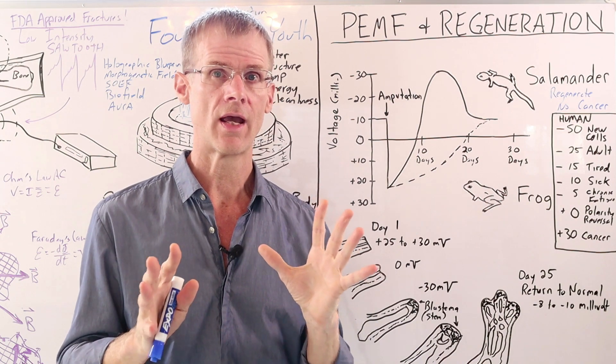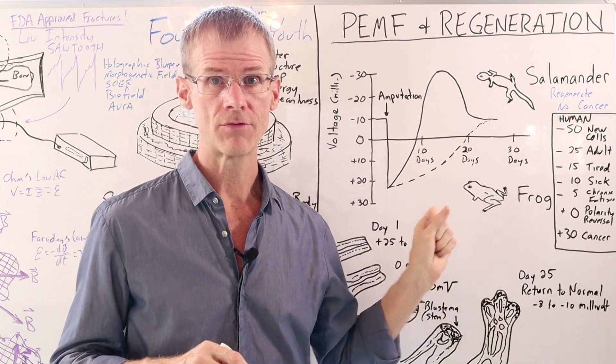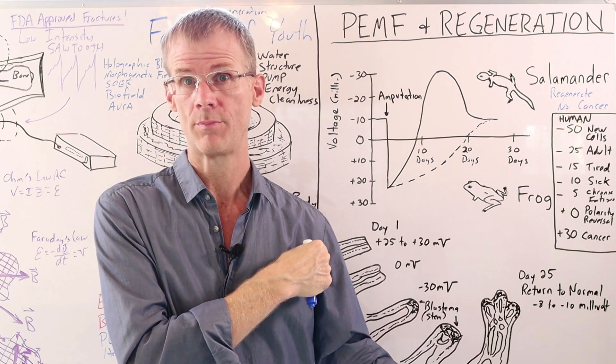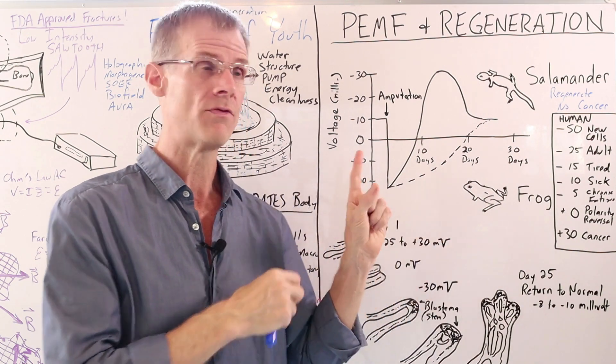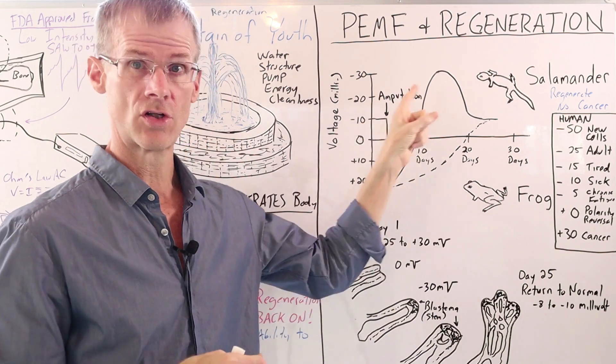What Becker did was he surgically amputated salamanders and frogs and he measured the voltage on the stump. You know, after it kind of healed over, you can measure the current or the voltage. And what he found was summarized in this chart here.